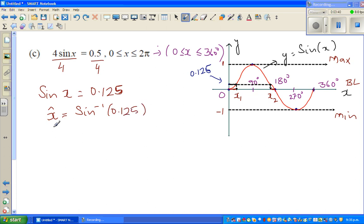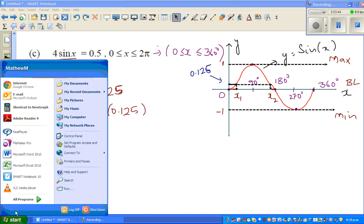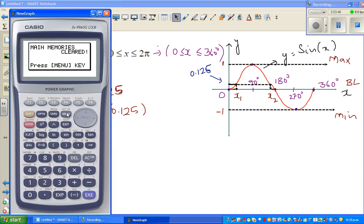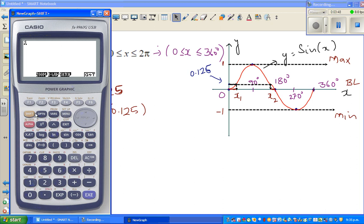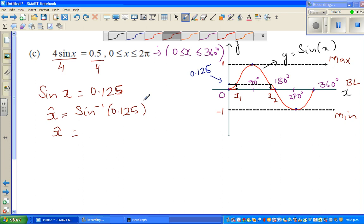The calculator will give me your first angle, which is your x1. Let me use a calculator. This is my calculator—go to run. Always check your setting; it should be in degrees. We're working in degrees, so press shift sine of 0.125, which is 7.2 degrees, rounding to 1 decimal place.